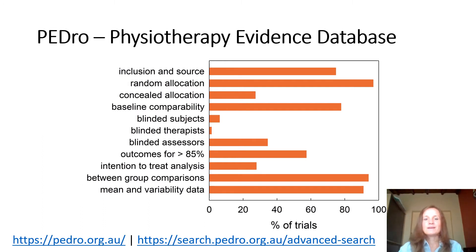The PEDro scale was designed through an in-depth consultation process with experts and helps users of the PEDro database to quickly see which trials are internally valid and have sufficient statistical information so that results are interpretable. However, the PEDro scale does not state whether a study's conclusions are valid or not. A study may get a high PEDro rating and show a large treatment effect but may not be clinically useful. So when interpreting a trial's findings, one should consider whether the treatment effect was big enough to be clinically worthwhile, and whether the positive effects outweigh the negative effects as well as the cost-effectiveness of the treatment.